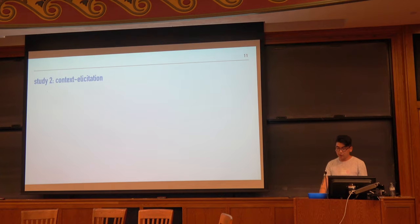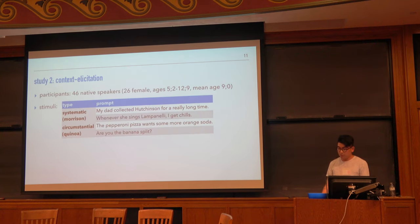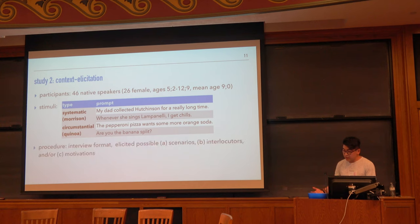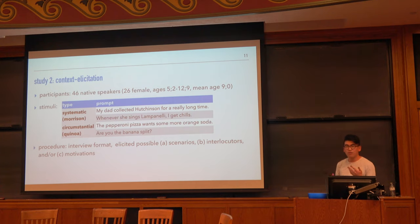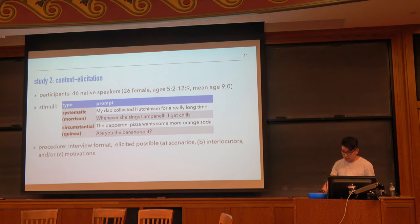Let's move on to study two. We directly tested kids' developing context construability in this task. We had 48 children, and we gave them prompts like, my dad collected Hutchinson for a really long time, or are you the banana split? We did this in an interview format, and we asked them to give us possible scenarios, interlocutors, and motivations — can you think of someone who might have said something like this, where they might have been, or what they were trying to say? We wanted to see if they could come up with a licensing context that would support the metonymic interpretation. All responses were coded binarily for a correct metonymic interpretation or an incorrect literal interpretation.